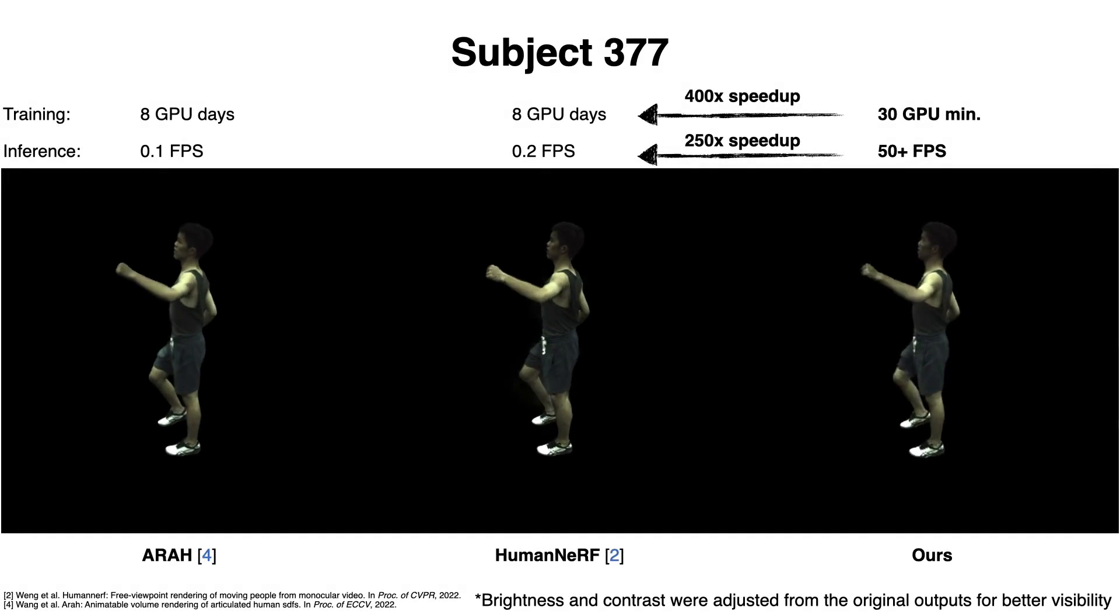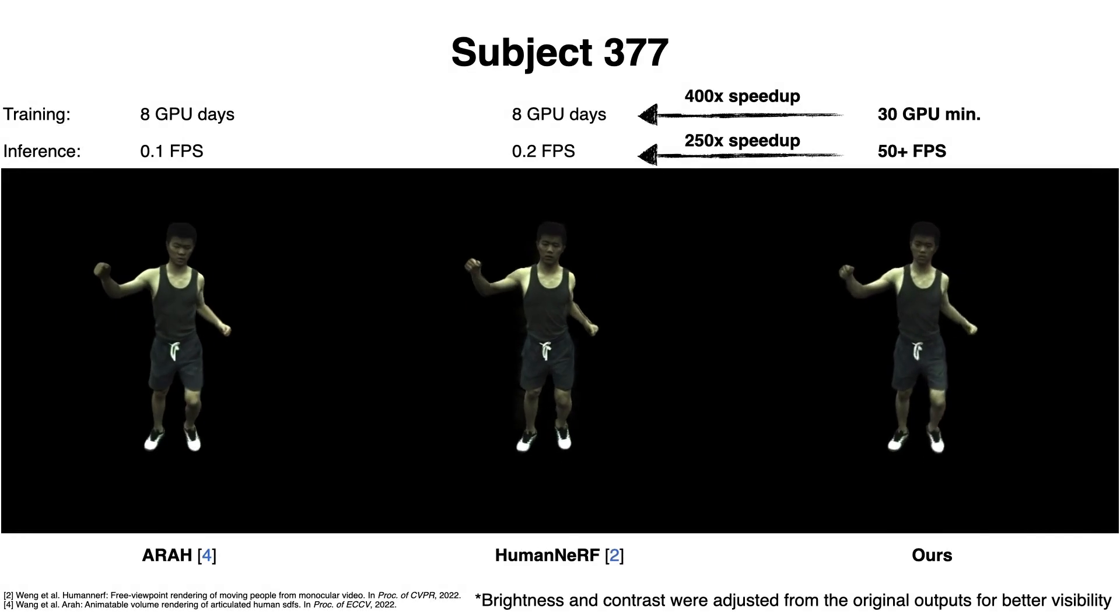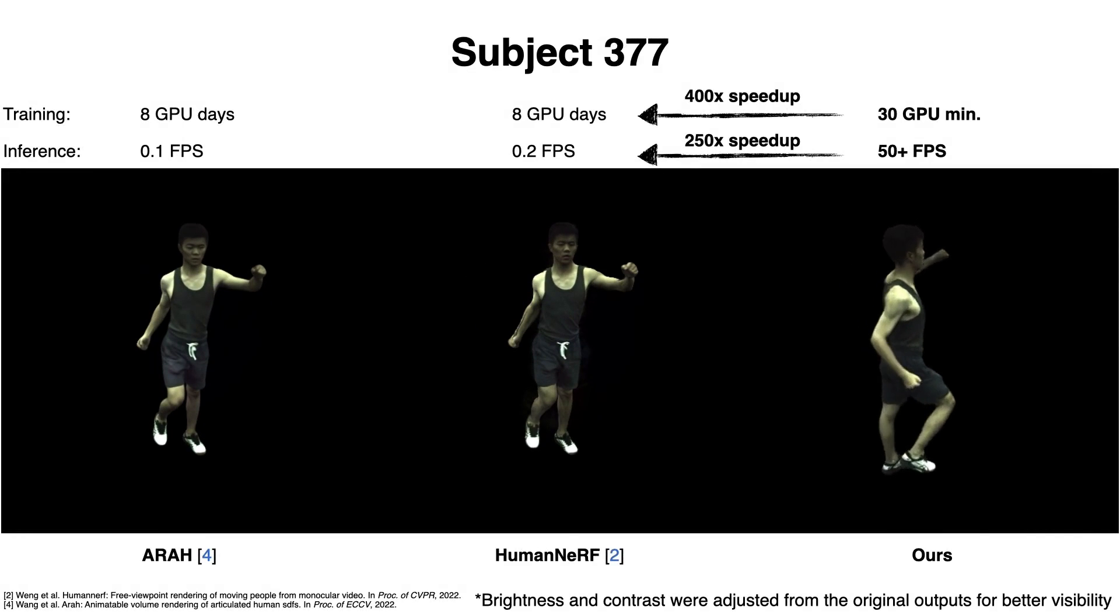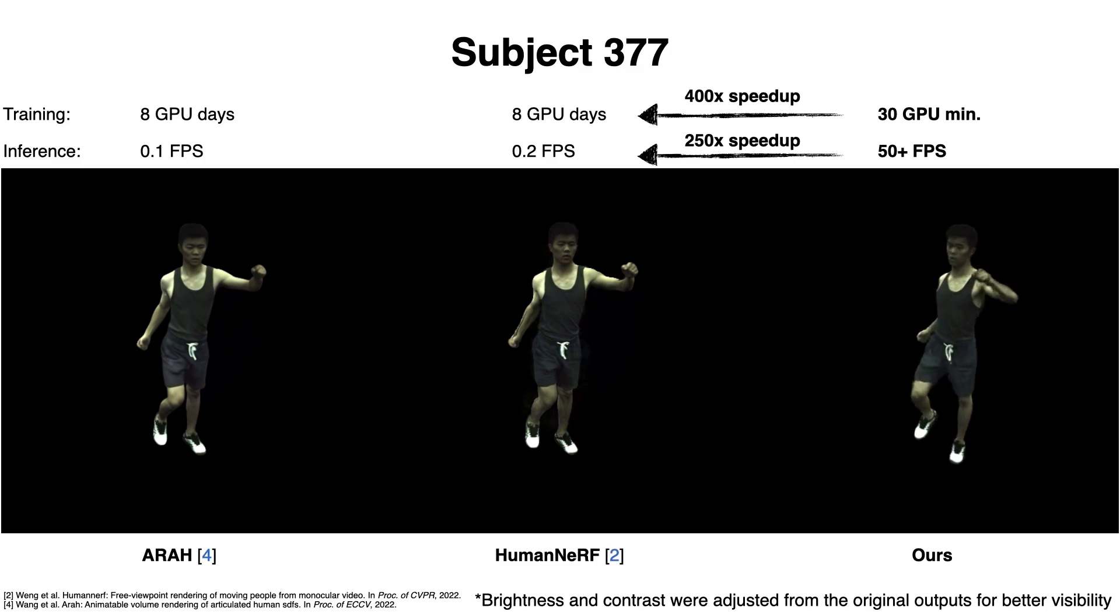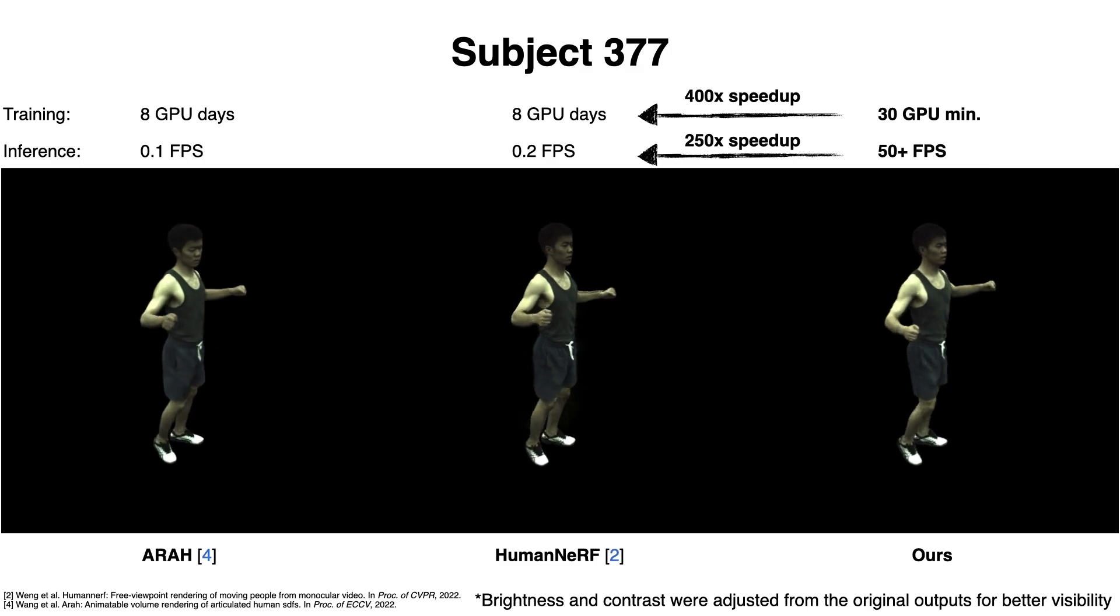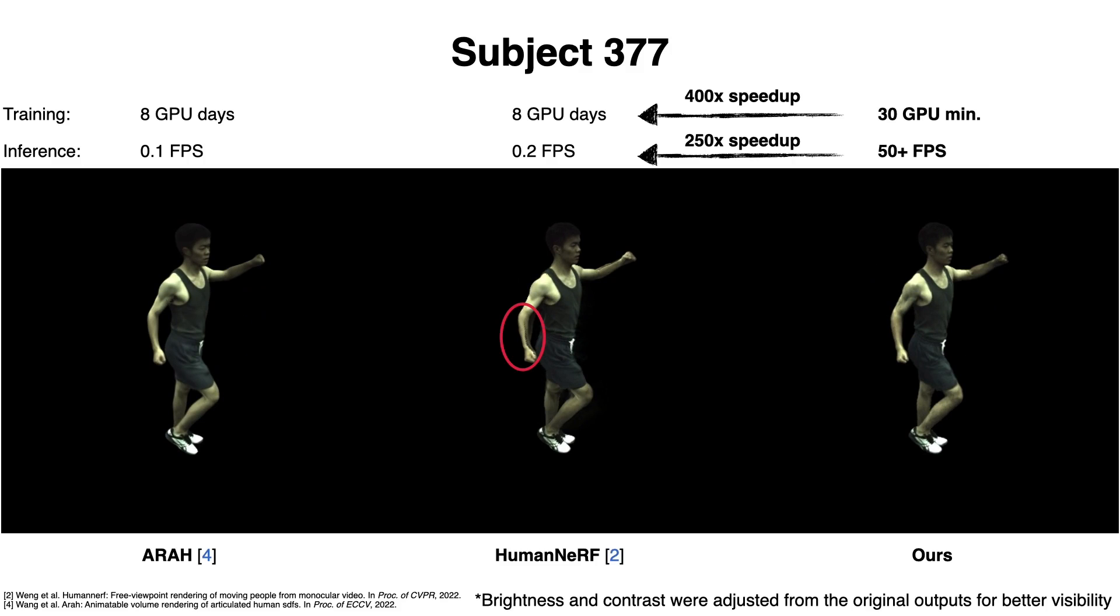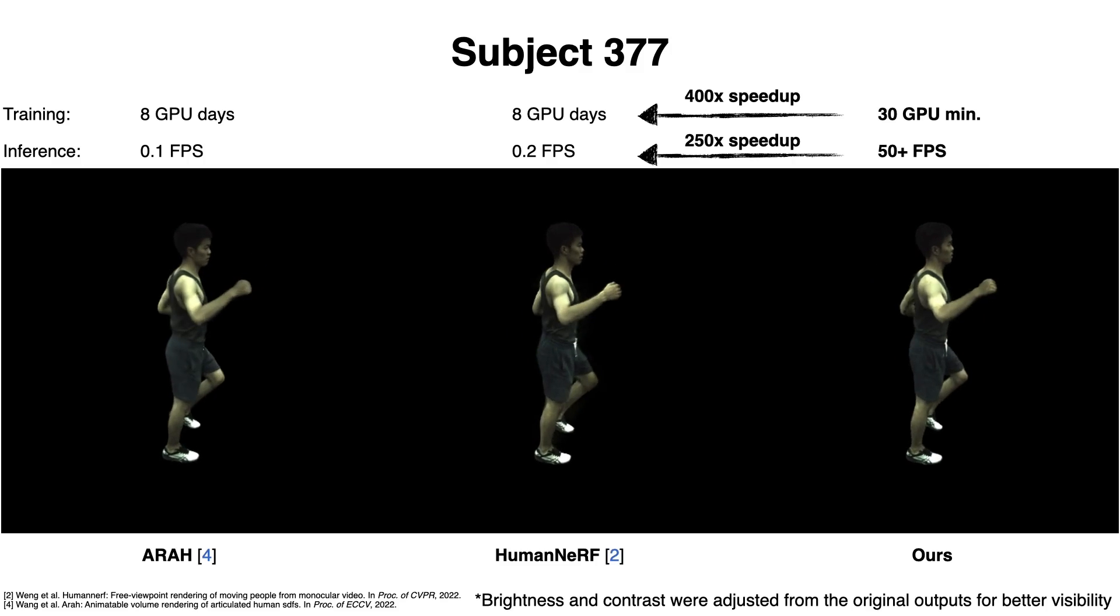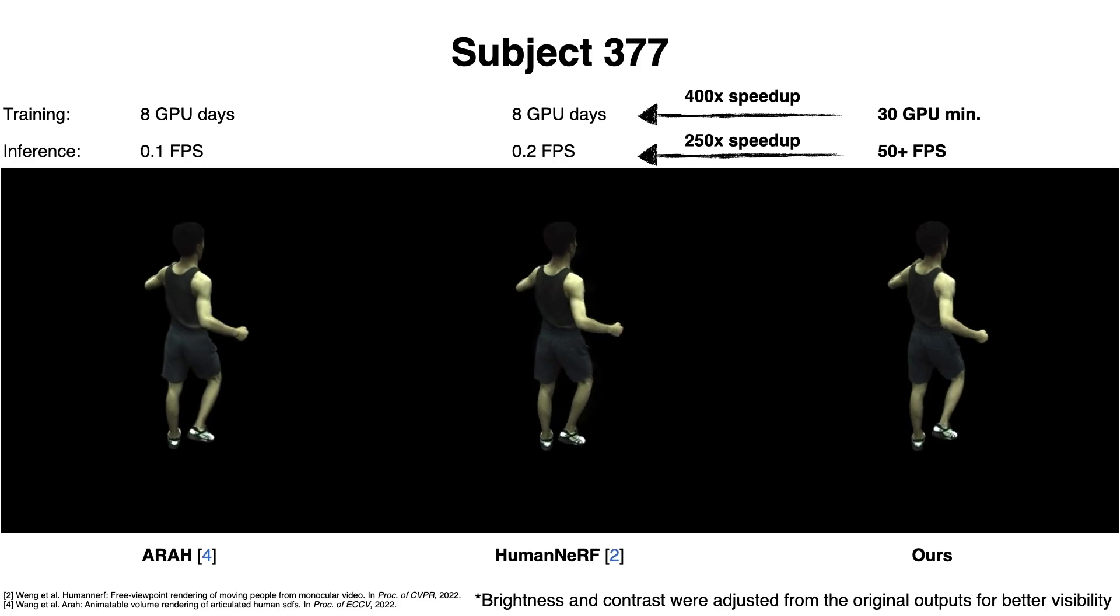ARAH and Human NeRF achieve higher rendering quality but require days of training and several seconds for inference, while our method can be trained in only 30 minutes and render at an interactive frame rate of over 50 FPS, achieving two orders of magnitude speedup.